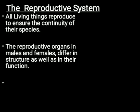All living things reproduce to ensure the continuity of their species, whether it's a plant, animal, or microorganism. All living organisms reproduce and produce offspring in order to continue their species. For example, plants produce fruits, from fruits we get seeds, and from seeds we get a new plant.